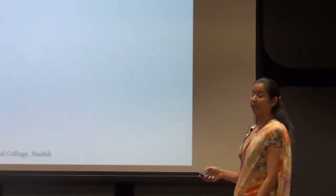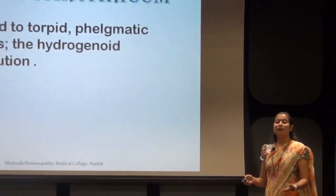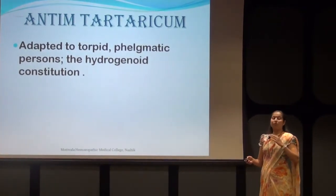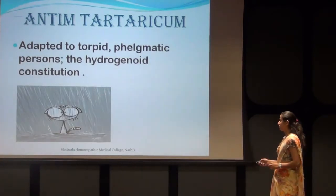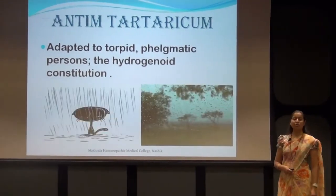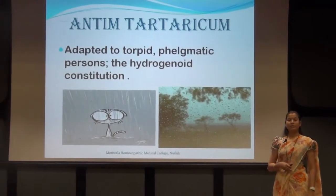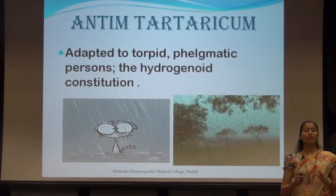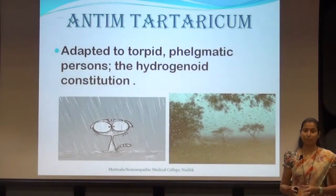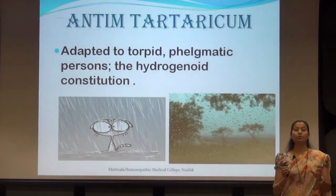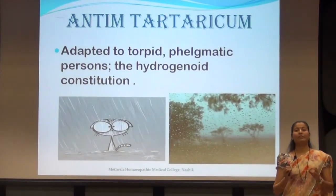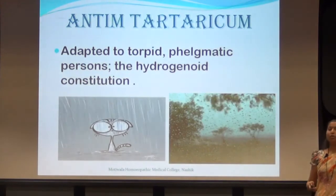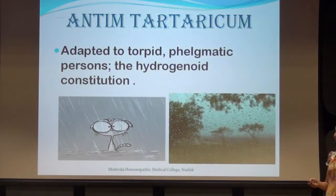It is adapted to the torpid — meaning very sluggish — people. The sluggishness is because of feebleness and prostration, a phlegmatic person and the hydrogenoid constitution. The hydrogenoid constitution belongs to those people who are generally affected by the humidity of the atmosphere, specifically in rainy weather and rainy season, which profoundly acts on the respiratory tract and mucus production.